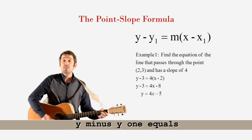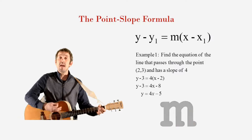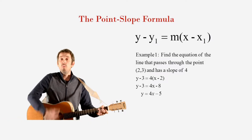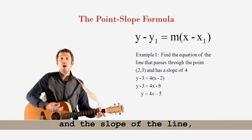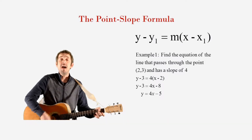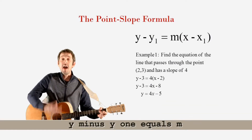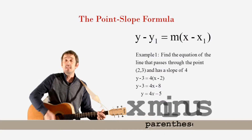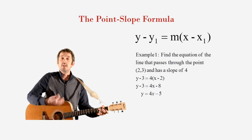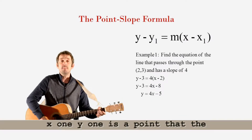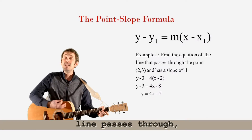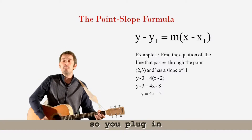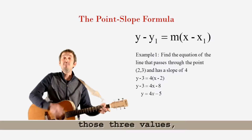y minus y1 equals m parenthesis x minus x1, when you know a point on the line and the slope of the line. You find y minus y1 equals m parenthesis x minus x1. x1, y1 is a point that the line passes through. m is the slope, so you plug in those three values.